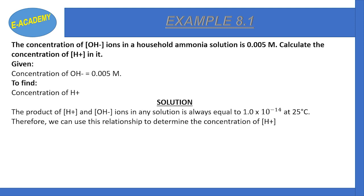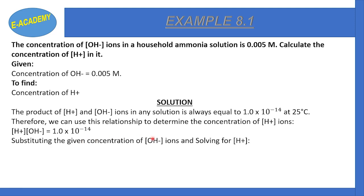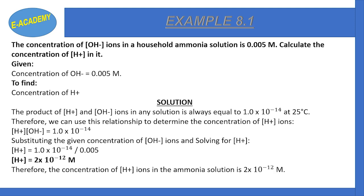We know that the product of H⁺ ion and OH⁻ ion is 1.0 × 10⁻¹⁴ at 25°C. So we use: H⁺ × OH⁻ = 1.0 × 10⁻¹⁴. Therefore, H⁺ = 1.0 × 10⁻¹⁴ divided by 0.005. By calculating, we get H⁺ ion concentration = 2 × 10⁻¹² molar. The concentration of H⁺ ions in the ammonia solution is 2 × 10⁻¹² molar.